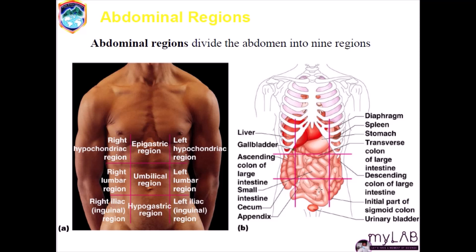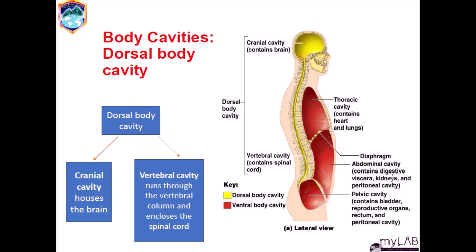In the umbilical region we have the small intestine, and in the hypogastric region we have the urinary bladder. In the left hypochondriac region we have the diaphragm and the spleen. In the left lumbar region we have the descending colon of the large intestine. In the left iliac or inguinal region we have the initial part of the sigmoid colon. These quadrants and regions are important for helping us locate different organs within the body. The dorsal body cavity is composed of the cranial cavity that houses the brain, and the vertebral or spinal cavity that runs through the vertebral column and includes the spinal cord.